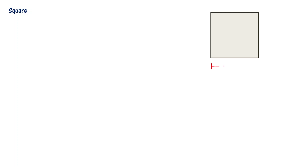Square is a 2D plane figure. A square has 4 sides and all 4 sides are of equal length. For example, if one side is S units, then all four sides are S units each.